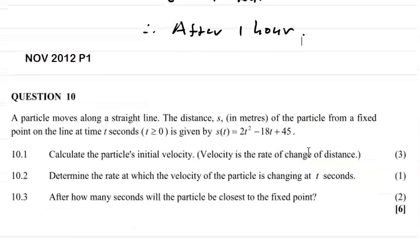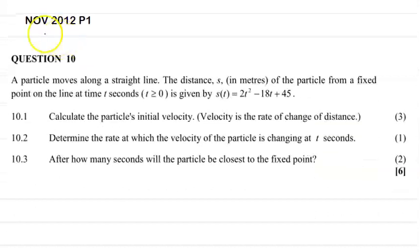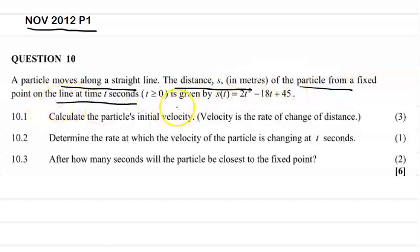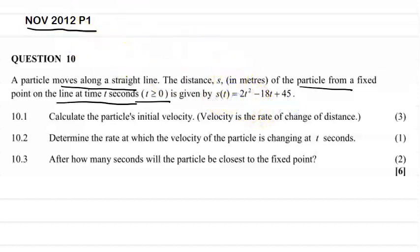We're now going to look at another question from the November 2012 Paper 1. A particle moves along a straight line. The distance S in meters of the particle from a fixed point on the line at time T seconds, where T > 0, is given by: S(T) = 2T² - 18T + 45.